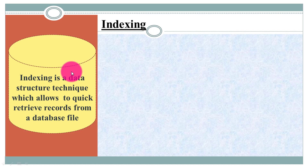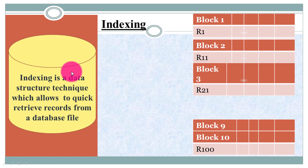Now if the database file is sorted, we can apply binary search for ordered records. But if the database is unsorted, the system has to search all blocks one by one, possibly until the end of the file. Whether the data file is sorted or unsorted, it takes time for searching. So the solution to reduce access time is a technique called indexing.